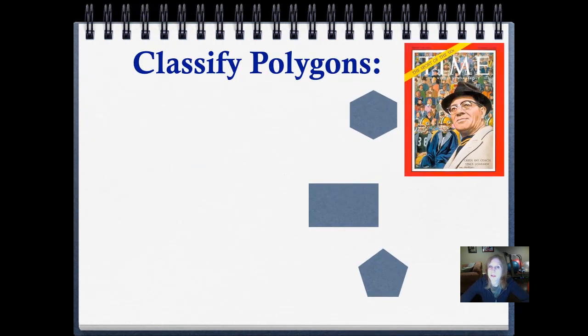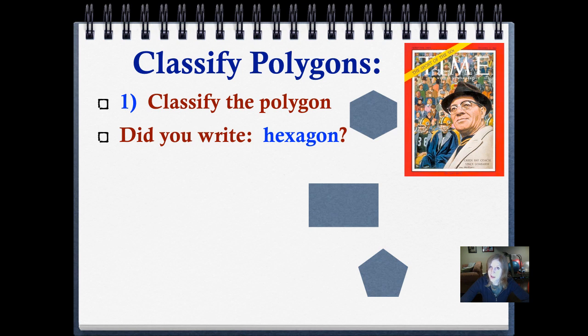We're going to do some classifying polygons. If you need to, go back and look at that vocabulary that you just studied, and that will help you. And you may have to do some counting. Classify the polygon to the right of the word polygon. Pause it and push play when you've written it down. Did you write hexagon? That shape, that polygon, has six sides, and we remembered that because the six has an X in it, and the word hexagon has an X in it. A hexagon has six sides.